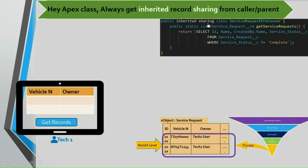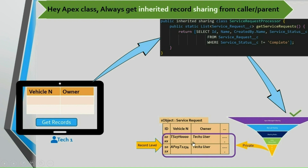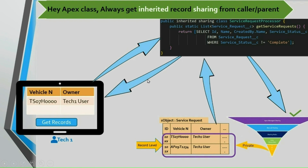Now let's see the effect of inherited sharing. We are using the inherited sharing keyword for this class. When tech1 user clicks on get records, it invokes this method — but the class is tagged with inherited sharing and the transaction is started from this class itself. So it runs in user mode and respects all the record sharing techniques applied for this user, hence returning only one record. Whether tech1 user comes via LWC, Visualforce page, or REST API, the behavior is the same.